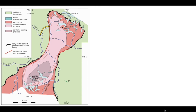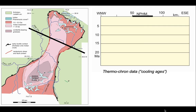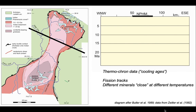Let's think about the timing and consider a transect in the west-northwest to east-southeast direction across the massif. We're going to plot thermochronology data — specifically fission track cooling ages. This method determines a cooling age, and different minerals close at different temperatures, so they record different times and temperatures. Let's start with the mineral zircon, which closes at around 200°C. Fission tracks in zircon therefore record the last time that mineral was at 200°C.